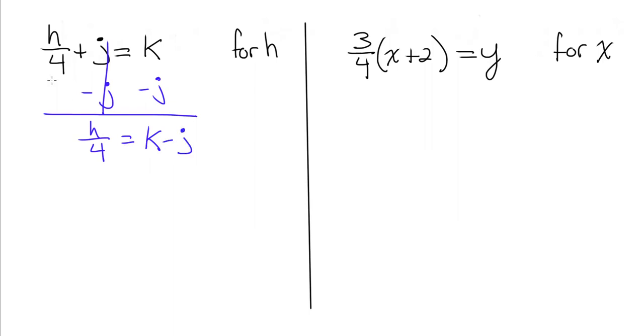Now, our next step to isolate h is to undo division by four, so we need to multiply both sides of this equation by four. We need to recognize that on the right side, we're not just multiplying k by four or negative j by four. We're multiplying k minus j by four, so we have to put parentheses here. On the left, four divided by four cancels out, leaving me with h.